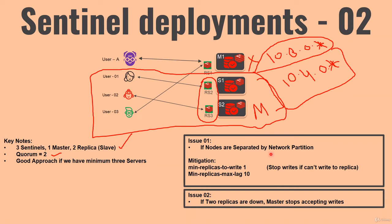There is a mitigation for this: the min-replicas-to-write configuration, which you can set to 1. In this scenario, the master will not have any slaves reachable, and since min-replicas-to-write is set to 1, the master must have at least one replica to replicate its data to. If it cannot find that one replica, it will not allow any write operation. User A will receive an error on write attempts, making them aware of the issue, while read operations can still succeed.